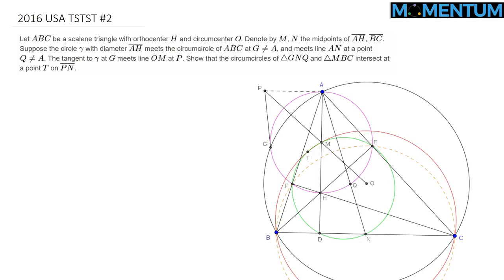We are given a triangle ABC, a scalene triangle with orthocenter H — you can clearly see it marked on our picture — and circumcenter O, also clearly marked. Let M and N be the midpoints of AH and BC respectively. The circle gamma with diameter AH is that purple circle, centered at M. Because the diameter is AH and the foot of each altitude subtends a 90-degree angle, E and F are on that circle gamma as well.